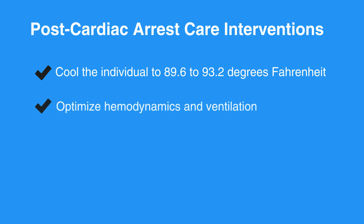To optimize hemodynamics and ventilation, 100% oxygen is acceptable for early intervention but not for extended periods of time. Oxygen should be titrated so that the individual's pulse oximetry is greater than 94% to avoid oxygen toxicity. Be sure not to overventilate in order to avoid potential adverse hemodynamic effects. Keep ventilation rates at 10 to 12 breaths per minute to achieve ECO2 at 35 to 40 millimeters of mercury. IV fluids and vasoactive medications should be titrated for hemodynamic stability.